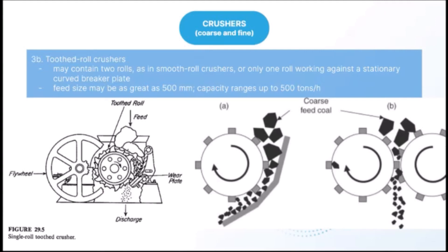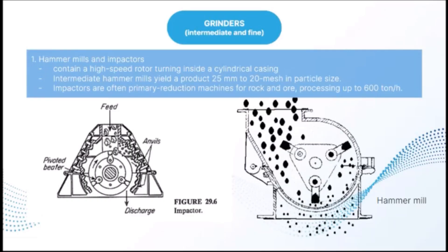In tooth roll crushers, roll faces carry corrugations, breaker bars, or teeth. Such crushers may use two rolls or one roll working against a stationary curved breaker plate. Machines known as disintegrators contain two corrugated rolls turning at different speeds that tear the feed apart, or a small high-speed roll with built-in reverse breaker bars turning toward a large, slow-speed, smooth roll. Heavy-duty tooth double roll crushers are used for primary reduction of coal; feed may be as large as 500 mm with capacity up to 500 tons per hour.